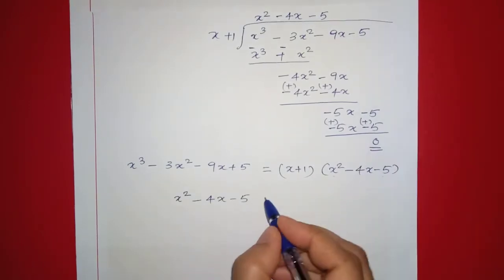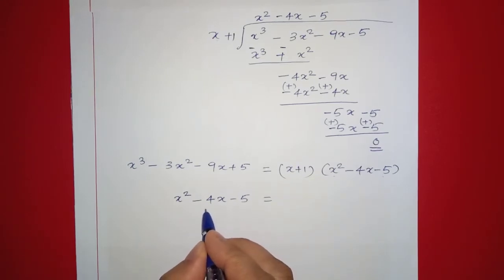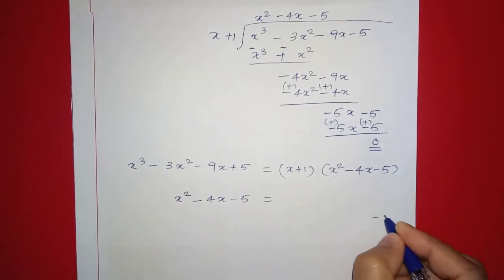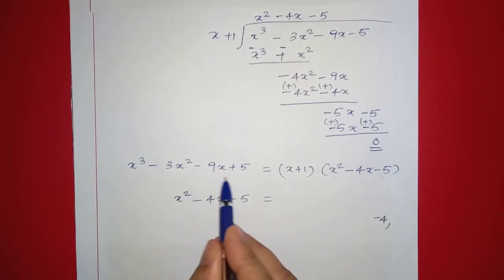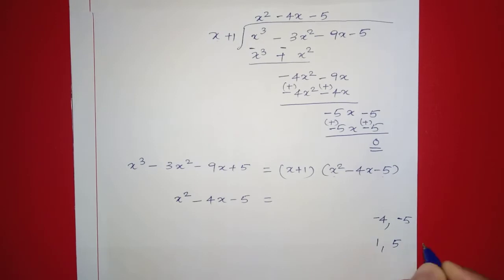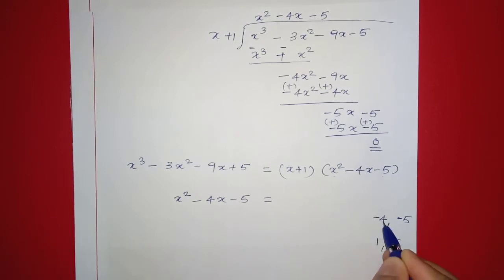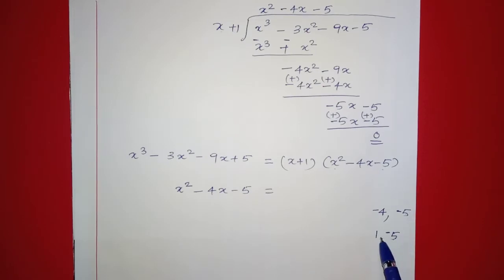To factor the degree 2 quotient x squared minus 4x minus 5, we split the middle term. Multiply 1 into negative 5 equals negative 5. We need factors of negative 5 that add to negative 4. Those are negative 5 and positive 1: product is negative 5, sum is negative 4.